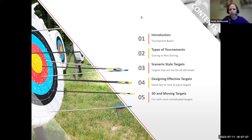Hello again. My mundane name is Sarah Aerosmith. My SCA name is Anna von Arweiler. We're going to be learning about how to design targets for archery for SCA archery.